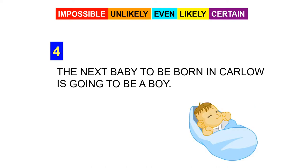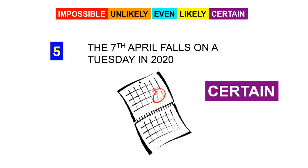The next baby to be born in Kylo is going to be a boy. Would that be impossible, unlikely, even, likely or certain? This would be even because it's a 50-50 chance - it's going to be a boy or a girl. What is the chance that the 7th of April falls on a Tuesday in 2020? That is certain. That won't change.